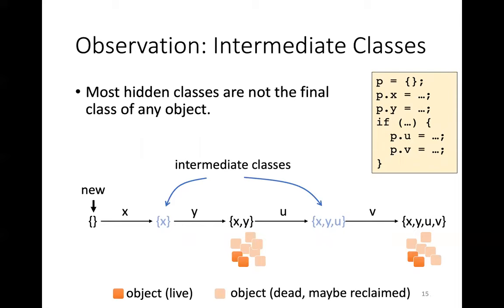However, we found that most hidden classes are not the final class of any object. For example, let's consider this program. Object P gets properties X and Y, and then under some conditions, it gets U and V. In this code fragment is executed repeatedly. Objects can eventually get only X, Y class or this X, Y, U class. These X and X, Y, U classes are abandoned. In this talk, I will call these classes intermediate classes and draw with blue.